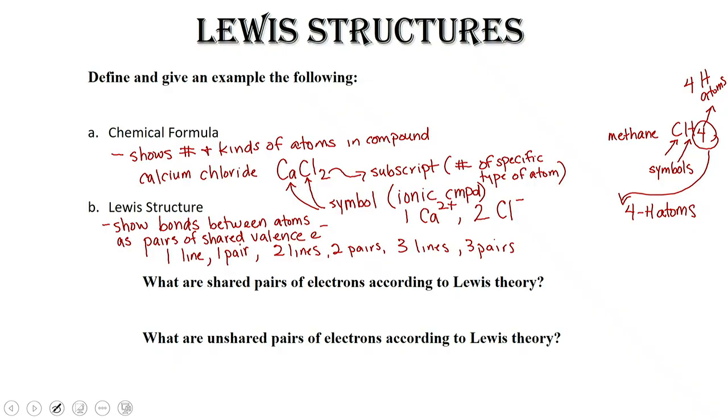When we're taking a look at a Lewis diagram or Lewis structure, we have something called shared electrons and unshared pairs of electrons. When we have electrons that are shared, we call those bonded pairs. When we have unshared pairs of electrons, we call those lone pairs. Remember these words because we're going to use them later when we draw our Lewis structures.